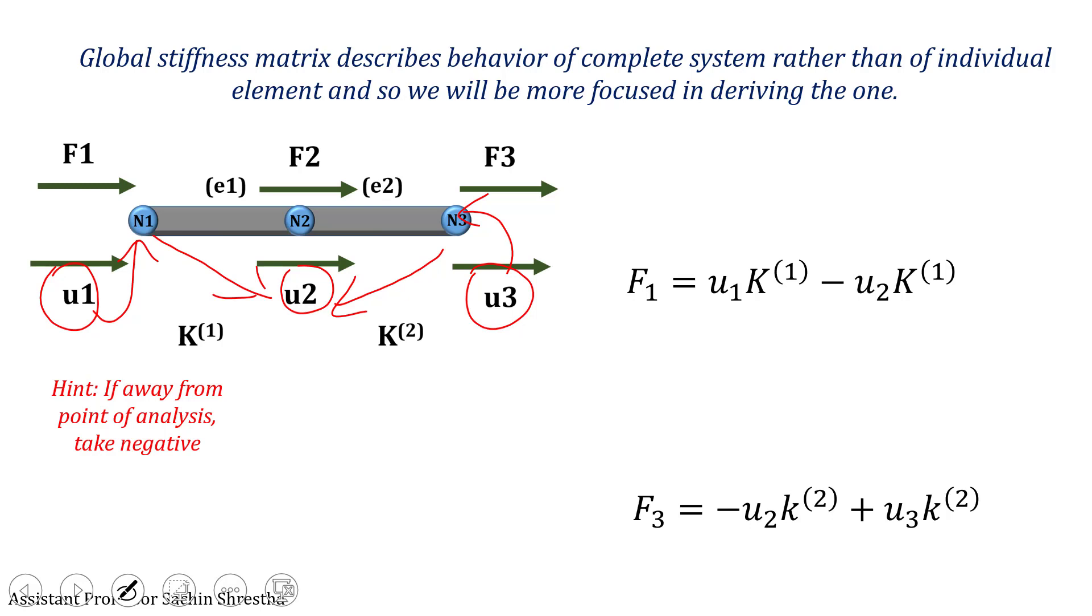For force F2, both U1 and U3 will be negative since both are away from node 2. With U2, K1 and K2 both should be positive and added, thus resulting in negative for U1, negative for U3, and positive for U2.